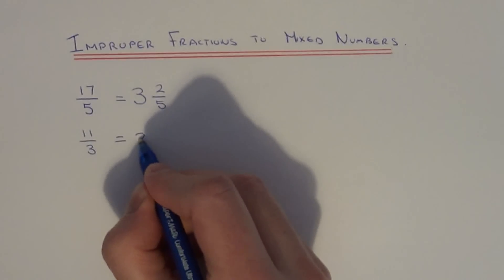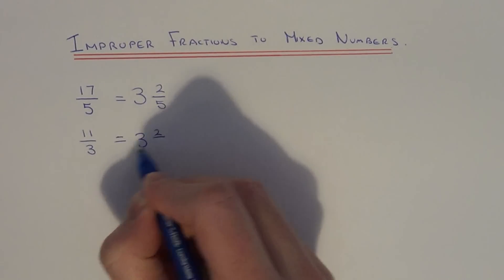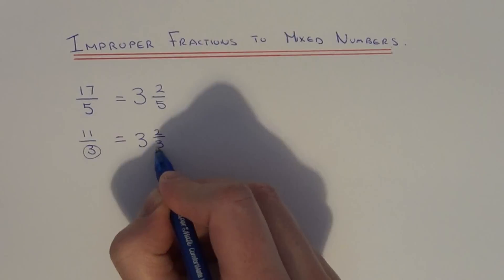So we put 3 as the whole part. The remainder of 2 goes on the numerator, and we keep the denominator the same.